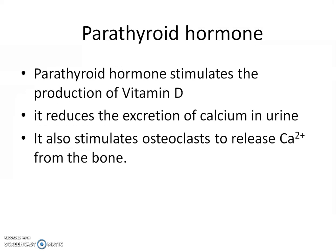Now let's look at the parathyroid hormone. The parathyroid hormone stimulates the production of vitamin D. It reduces the excretion of calcium in the urine. It also stimulates osteoclasts to release calcium 2+ from the bone, which demineralizes the bone.